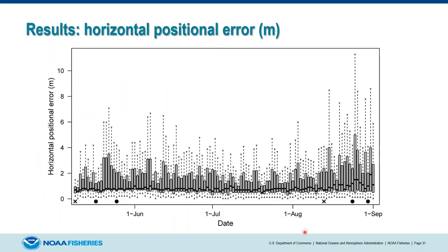The horizontal positional error of the system was about half a meter to 1.5 meters over the entire course of the study — really high precision and accuracy. We knew almost exactly where these fish were when their transmitters were pinging. Fish were tagged on two dates corresponding to the X marks, and trapping occurred on the dates shown as filled circles.